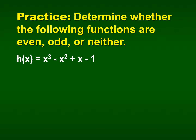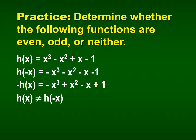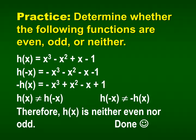Let's try x cubed minus x squared plus x minus 1. Replacing x with negative x gives a result that is not the same as the original — so it's not even. Multiplying the original by negative 1 also gives a different result — so it's not odd either. Using the trick, we can see we have an odd degree, an even degree, and another odd degree — mixed parity — confirming the function is neither even nor odd.